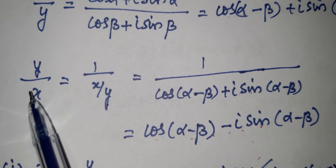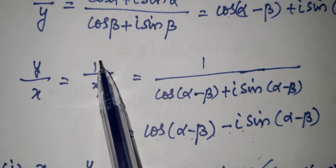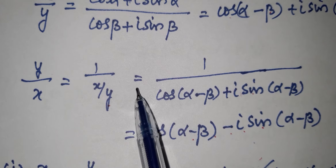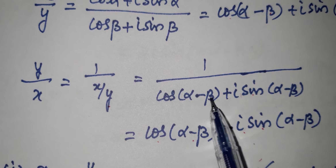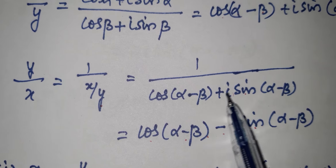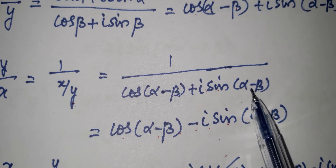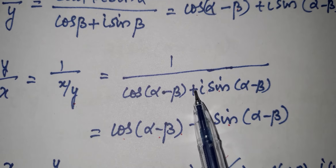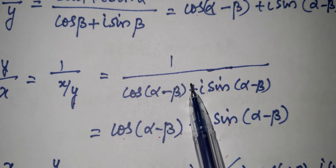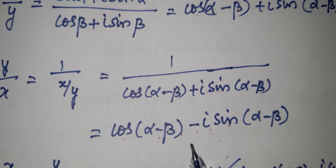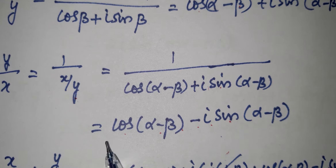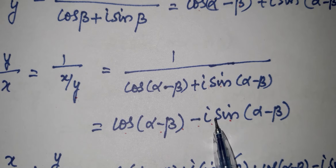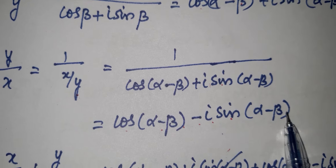This is y by x. y by x equals 1 divided by (x by y), which equals cos(α−β) plus i·sin(α−β). This is the direct way. The sign changes, so y by x equals cos(α−β) minus i·sin(α−β).